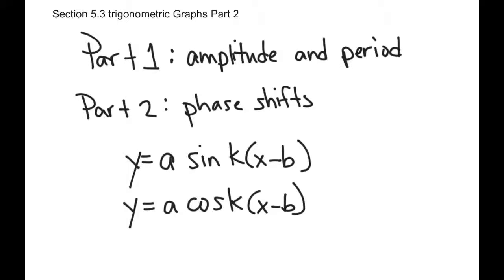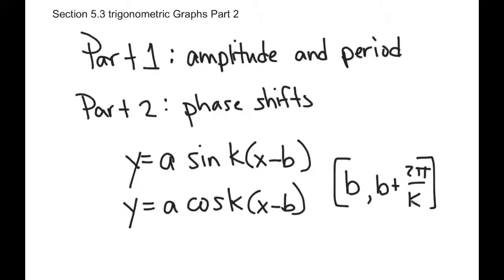In these generalized equations — y equals a sine of k times (x minus b), and y equals a cosine of k times (x minus b) — we already know that a is the amplitude and k is the value we use to find the period. The phase shift is going to be b. An appropriate interval for graphing one period of a graph that's had a phase shift is to start at b and to end at b plus 2π over k. This is what's going to help us out with our graphing.